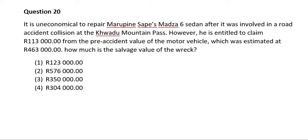Question twenty. It is uneconomical to repair Rupes's motor vehicle after it was involved in a road collision at the Quad to Mountain Pass. He is entitled to claim 118,000 rand from the pre-accident value of the motor vehicle which was estimated at 463,000 rand. The salvage value of the wreck: 463,000 minus 118,000 equals 345,000 rand — wait, the answer calculated is 345,000 rand, which is option number three.